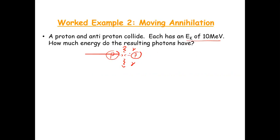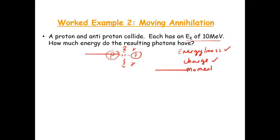A couple of things need to be conserved in this. Obviously energy and mass need to be conserved — energy in equals energy out. Charge needs to be conserved and momentum needs to be conserved. That's why we have the two photons going in two opposite directions.